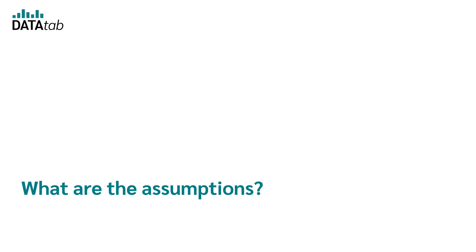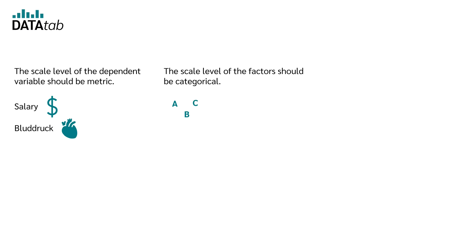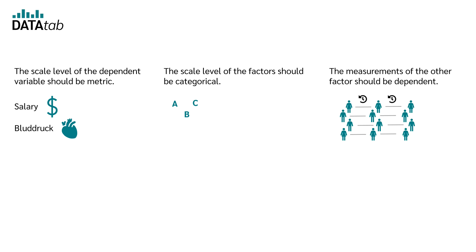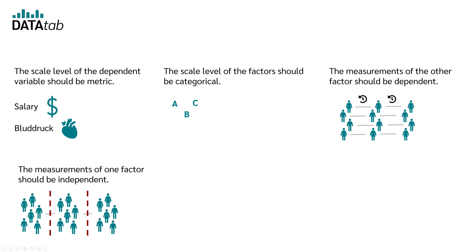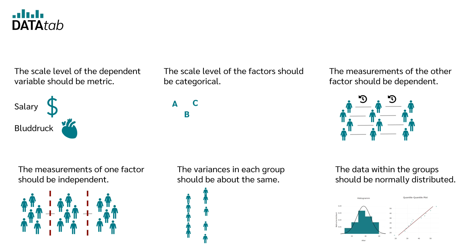What are the assumptions? The scale level of the dependent variable should be metric — for example, salary or blood pressure. The scale level of the factors should be categorical. The measurements of one factor should be dependent, resulting from repeated measurements of the same person. The measurements of the other factor should be independent, so the measurement of one group should not be influenced by another group. The variances in each group should be approximately equal, and the data within the groups should be normally distributed.